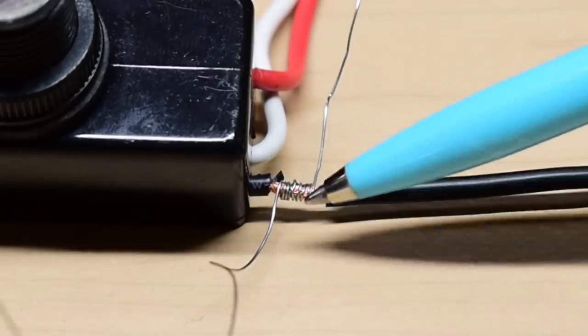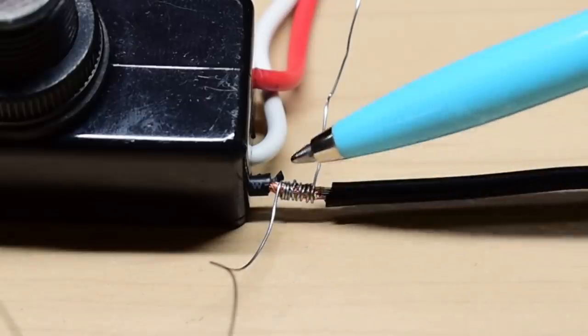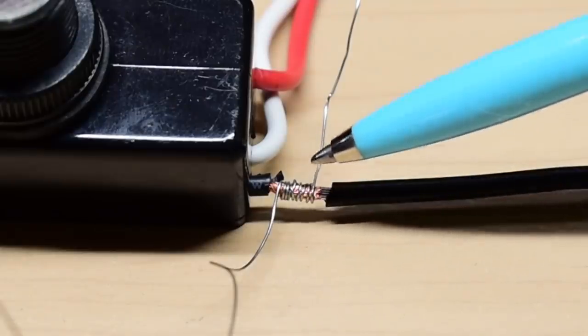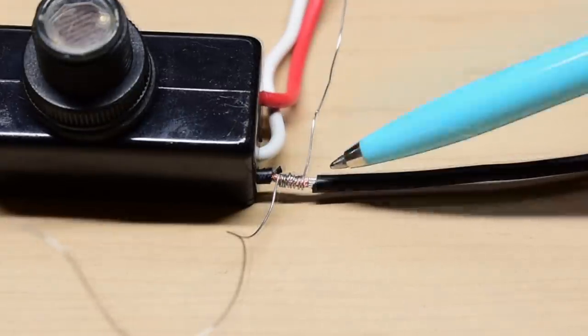When you wrap this, you want to use needle nose and just give it a really good pull on each wrap. You want to squeeze the two wires together so you crush each one of those stranded conductors, making it very hard to pull apart.